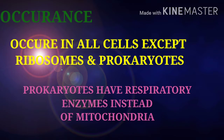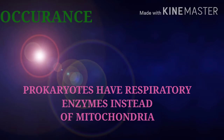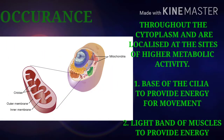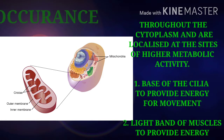A question can come: in place of mitochondria, what is present in prokaryotic cells? The answer is respiratory enzymes. Mitochondria are distributed throughout the cytoplasm and are localized at sites engaged in higher metabolic activities, such as at the base of cilia to provide energy for movement, and at the light band of muscle to provide energy for contraction.